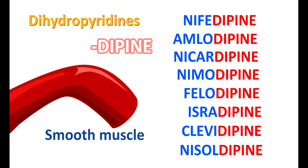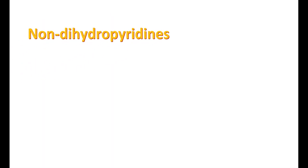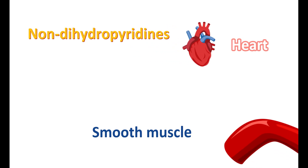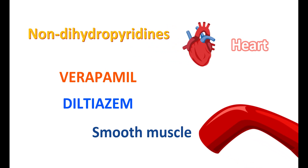All these drugs are dihydropyridines with the suffix '-dipine.' They are highly selective for smooth muscle and particularly act on vascular smooth muscle as vasodilators. On the other hand, non-dihydropyridines are selective for the heart with little selectivity on smooth muscle. Verapamil and diltiazem are the two important non-dihydropyridines — verapamil is a phenylalkylamine, whereas diltiazem is a benzothiazepine.